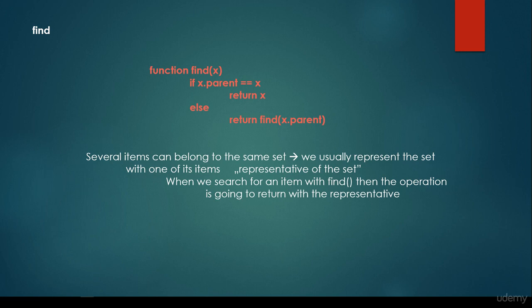What about the find? The find is going to get an item X, and if the parent is equal to itself — so X.parent is equal to X — then we return the X, and else we return find(X.parent). So we are going to call this find method recursively on the parent. Several items can belong to the same set, and we usually represent the set with one of its items, basically the representative of the set. That's why if X.parent equals itself, it means this is the root node. We usually implement this data structure as a tree-like structure with a root node, and the root node is the representative.